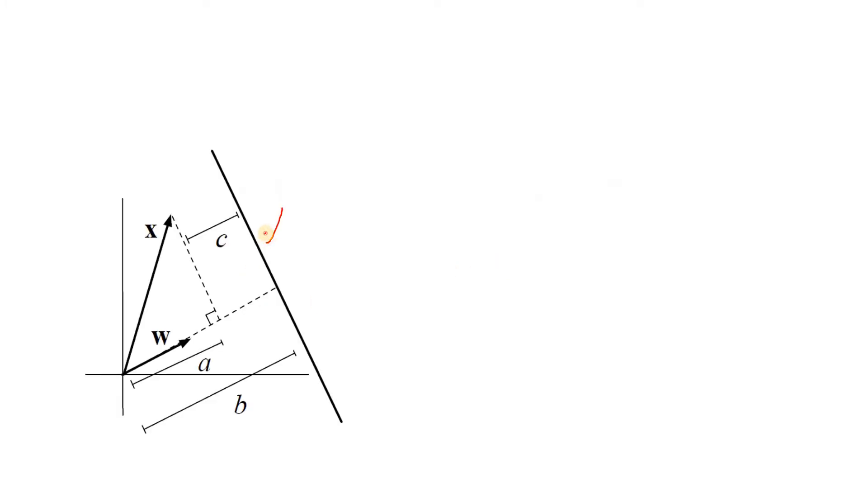This is our hyperplane which is separating our two classes present in our training data. This is one point for which we want to calculate the distance between this point and this hyperplane, which is basically c. For this point the position vector we have considered as x, and this w vector is the vector perpendicular to this hyperplane.